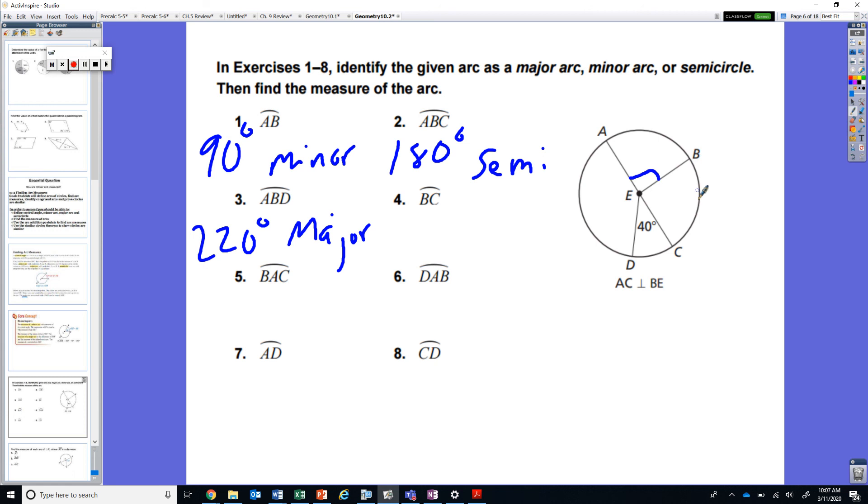Let's take a look at arc BC. Similar to AB we have another perpendicular line happening right in here. So we have another right angle. So that means that we have another minor arc at 90 degrees. Now let's go BAC and notice how I am going in that direction. I'm following the order from B to A all the way to C. So from B to A I have 90, from A all the way around to C I have 180. So the 90 here plus my 180 is a 270 degree major arc.